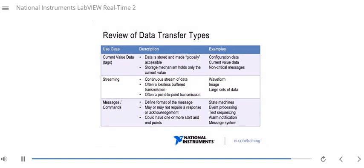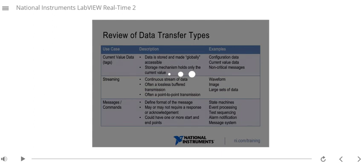This is what you're going to use for messages and commands. That's in contrast to tags where we have a non-critical message. Perhaps we don't mind if we lose a message. When we're dealing with a message or command, we want to make sure that all of that gets across and that we don't lose anything.